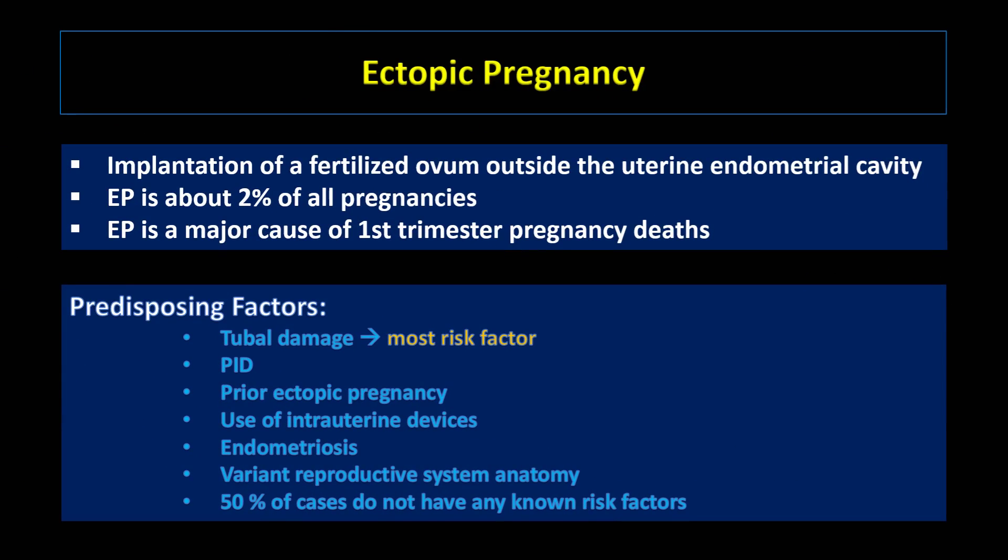First, what is ectopic pregnancy? It is a pregnancy that has been implanted outside the endometrial cavity. Ectopic pregnancy accounts for approximately 2% of all pregnancies. It is the most common cause of pregnancy-related mortality in the first trimester.